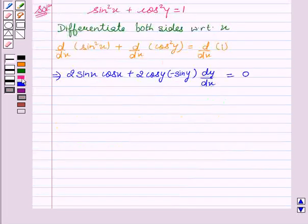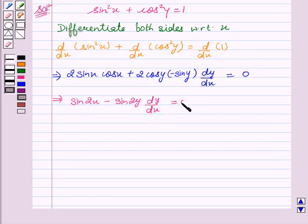Now we know that 2 sin x cos x is sin 2x and minus 2 sin y cos y is minus sin 2y into dy by dx equal to 0.